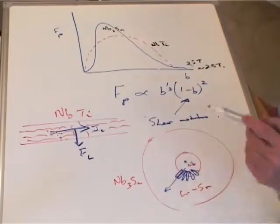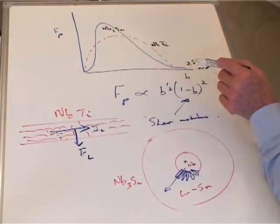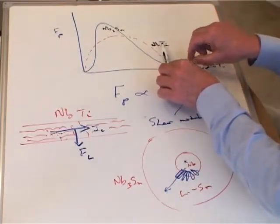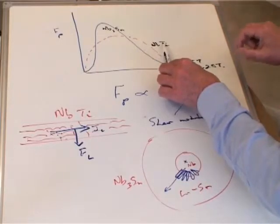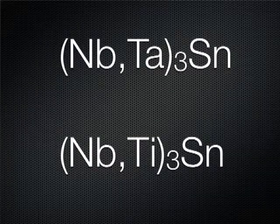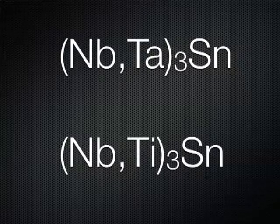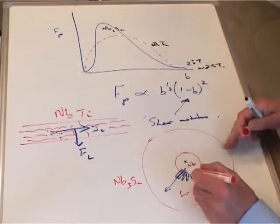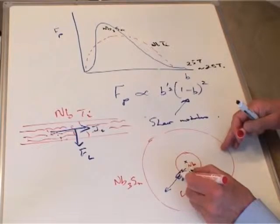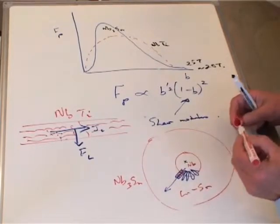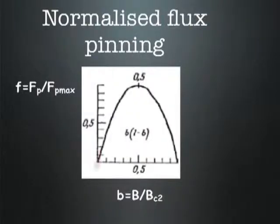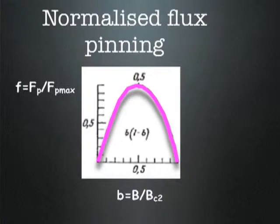We can alloy to raise the upper critical field because, of course, at any given field the current density is going to be higher the higher the upper critical field. We alloy the niobium with material like tantalum or titanium. The other thing we can do is to try and introduce pinning centers into this part of the microstructure to block the flux shearing down the grain boundaries. And this is an approach which doesn't seem to have been tried.